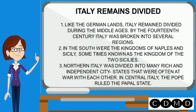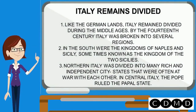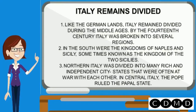Italy remains divided. Like the German lands, Italy remained divided during the Middle Ages. By the 14th century, Italy was broken into several regions. Northern Italy was divided into mainly rich and independent states that were often at war with each other. In central Italy, the pope ruled the Papal States.